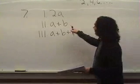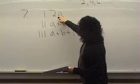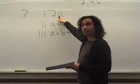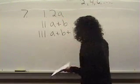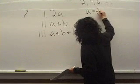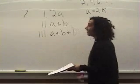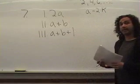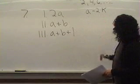So A is even, so A is divisible by two. So we can think of this as A can be written as some number two times K. Now, what do I mean by this?